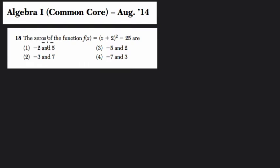Let's start by reading the problem. It says the zeros of this function, f of x. I like to rewrite the problem as I read it, equals x plus 2 squared minus 25.